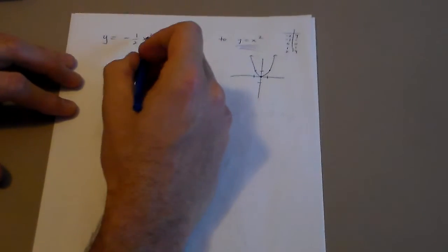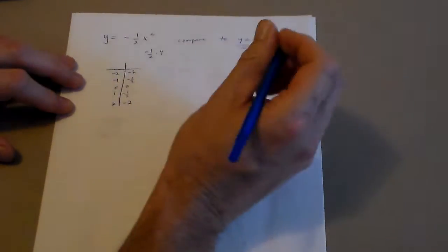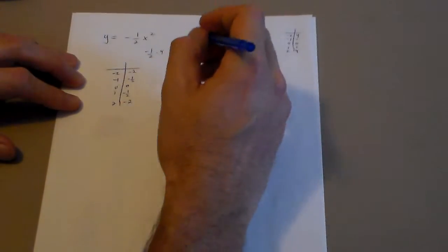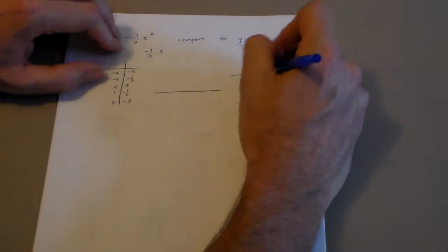Put a 0 in. 0 squared is 0. Okay. I'm going to do the same graph, I'm sorry. 0, 0.